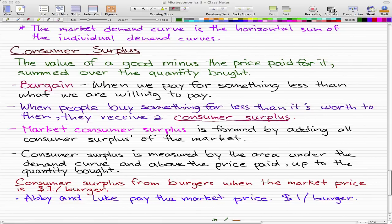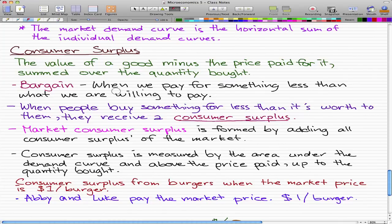A bargain is when we pay for something less than what we are willing to pay. If you value a cantaloupe at $200 but pay $100, that's a bargain for you.